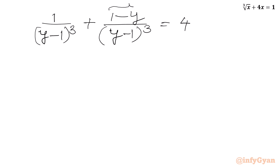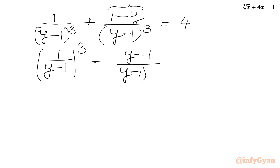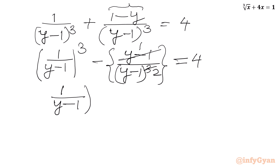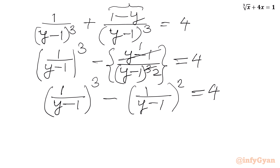Now we will take minus common from the second term, so I can write 1 over (y minus 1) squared minus (y minus 1) over (y minus 1) whole cube equal to 4. We can cancel (y minus 1) from the numerator, so numerator becomes 1 and the denominator has power 2. This gives us 1 over (y minus 1) cubed minus 1 over (y minus 1) squared equal to 4. Now let us consider 1 over (y minus 1) equal to m.